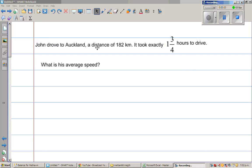John drove to Auckland, a distance of 182 kilometers. It took exactly one and three-quarter of an hour to drive. What is his average speed?